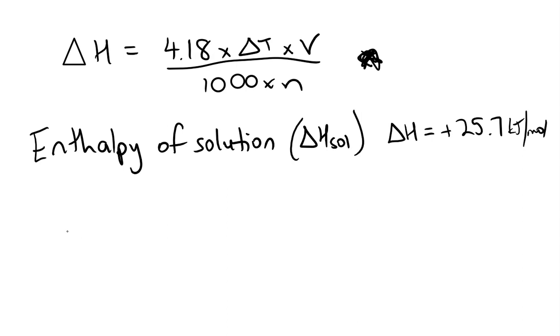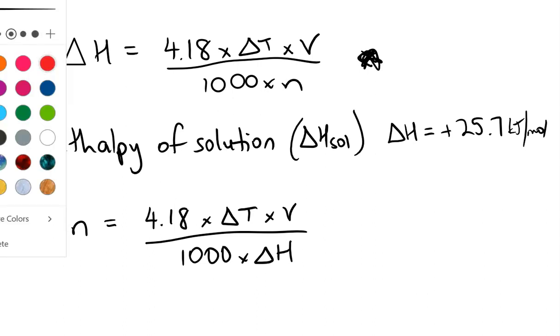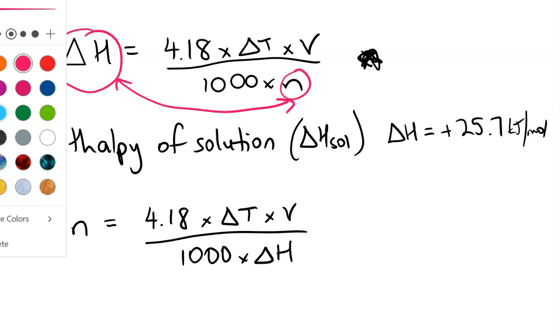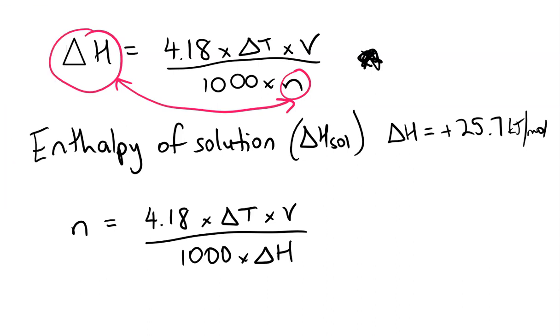So if you rearrange that equation, you get number of moles equals 4.18 times the change in temperature times the volume over 1,000 times delta H. All we're basically doing is swapping the delta H and this one here with the number of moles. They just swap nicely when we rearrange this equation.